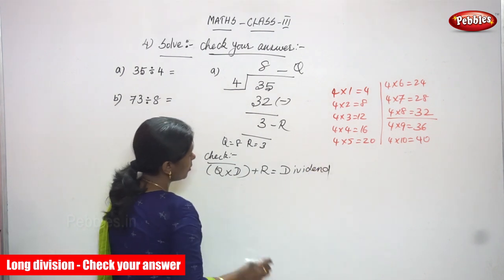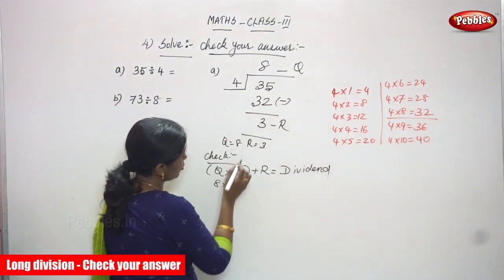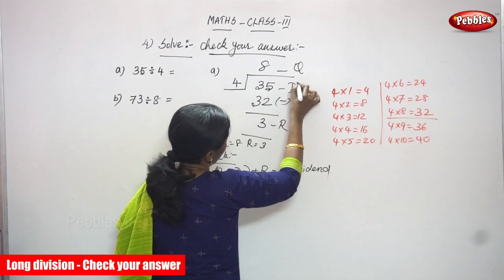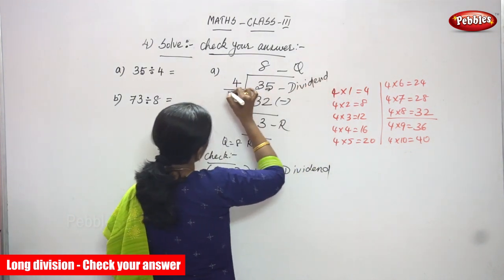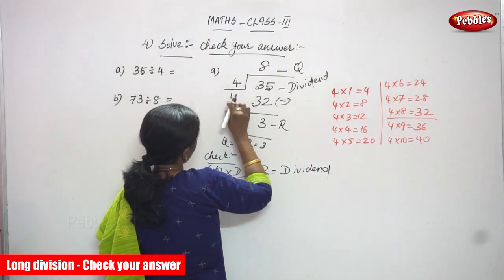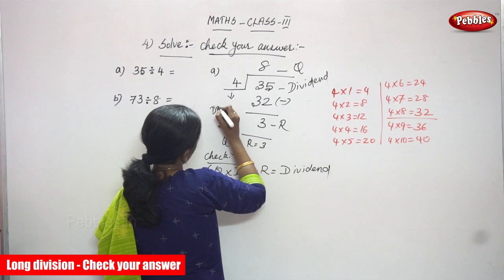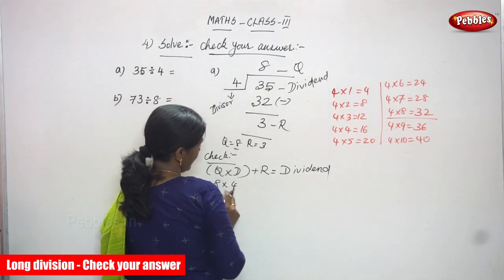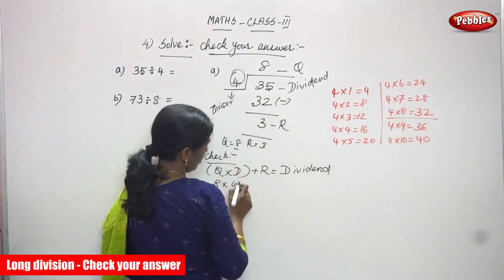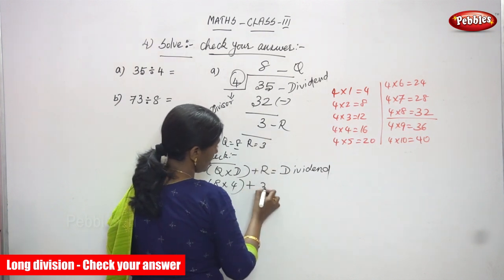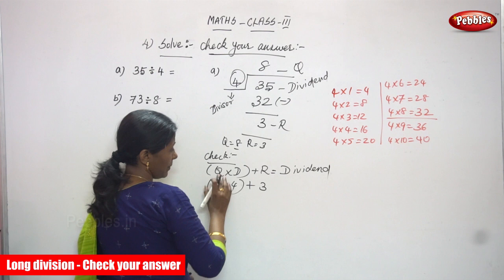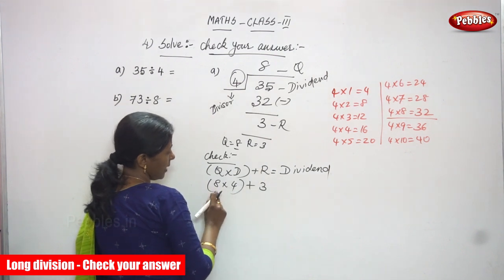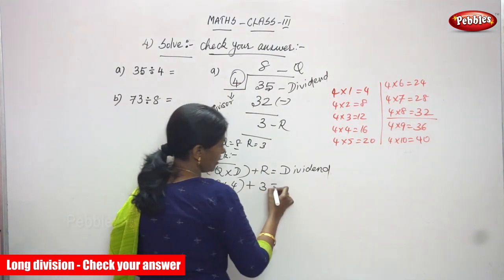So what is the quotient? 8 is the quotient, and 4 is the divisor. Apply the values in the formula: quotient × divisor plus remainder — that is 8 × 4 plus 3. 8 into 4 is 32. 32 plus 3 is 35. That is the dividend.